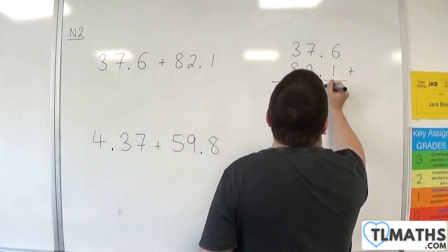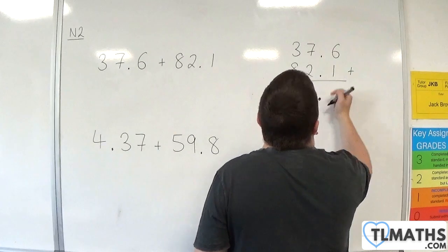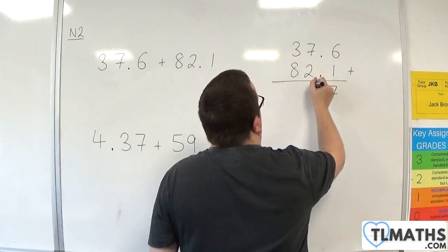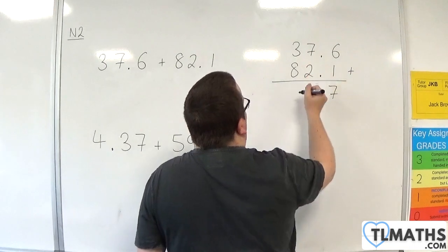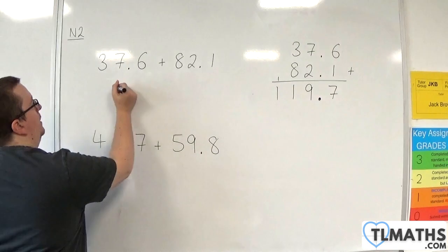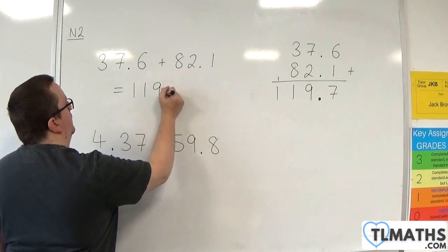So the decimal point will follow it down. 6 plus 1 is 7. 2 plus 7 is 9. 3 plus 8 is 11, so 1, carry the 1. And so we have 119.7.